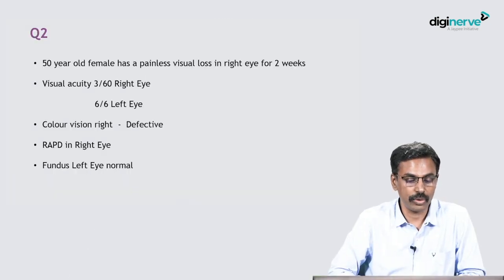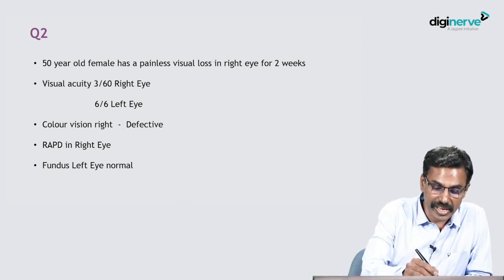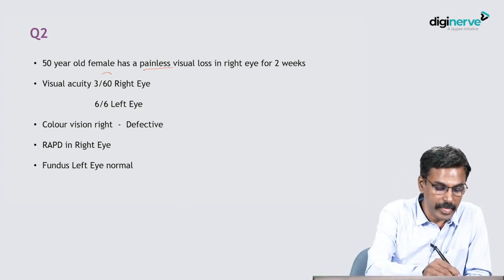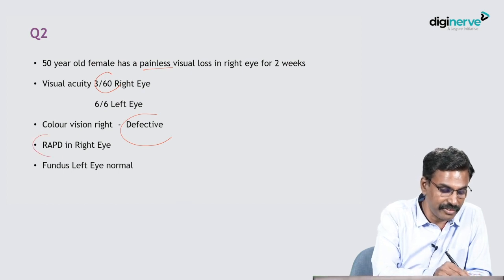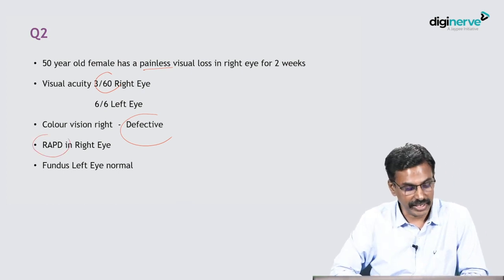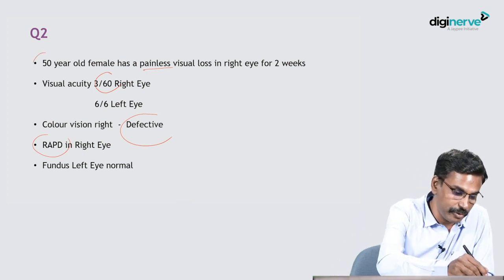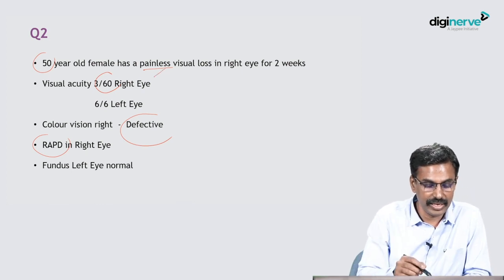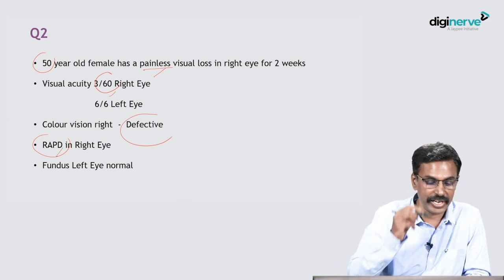The next case is a 50-year-old female who has painless loss of vision in the right eye of two weeks duration — note the painless. Visual acuity was 3/60, color vision was defective, and there is a relative afferent pupillary defect in the right eye. The left eye fundus was normal. So we have an elderly woman with painless loss of vision, defective visual acuity, and a relative afferent pupillary defect.